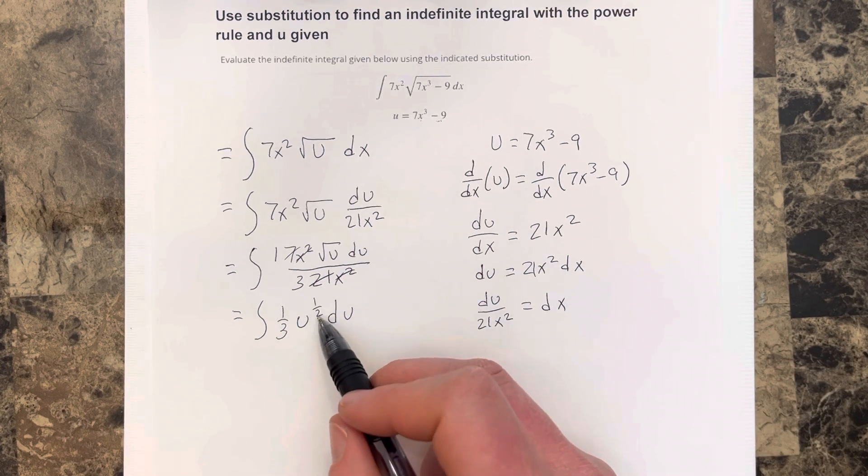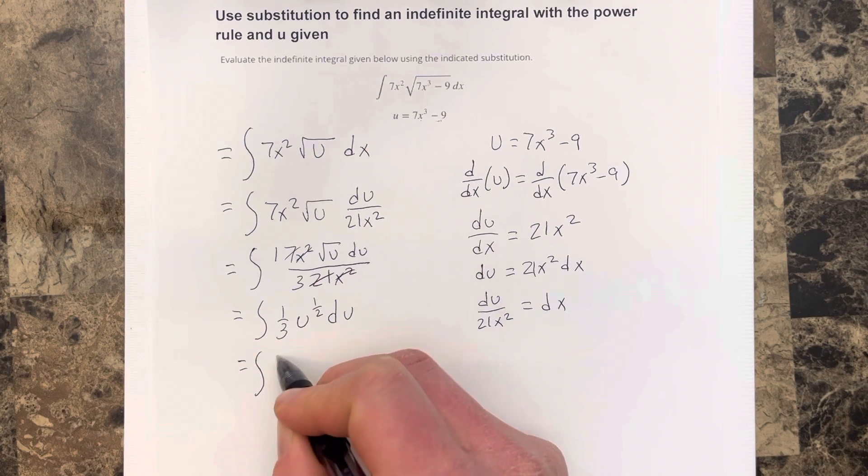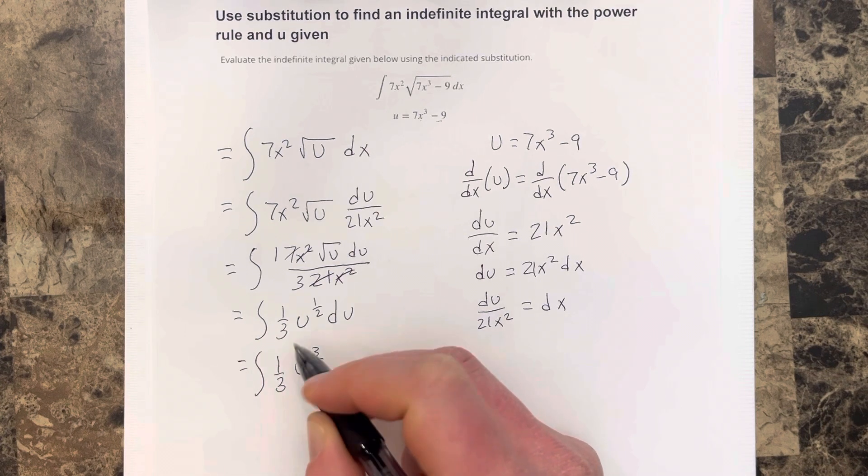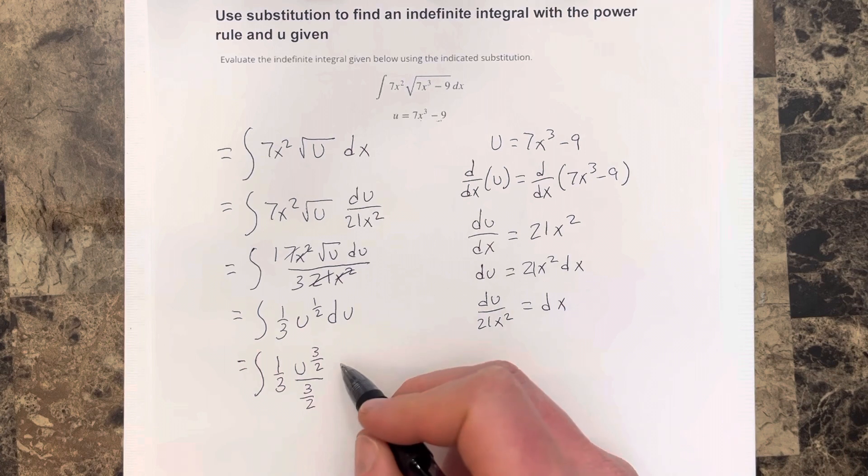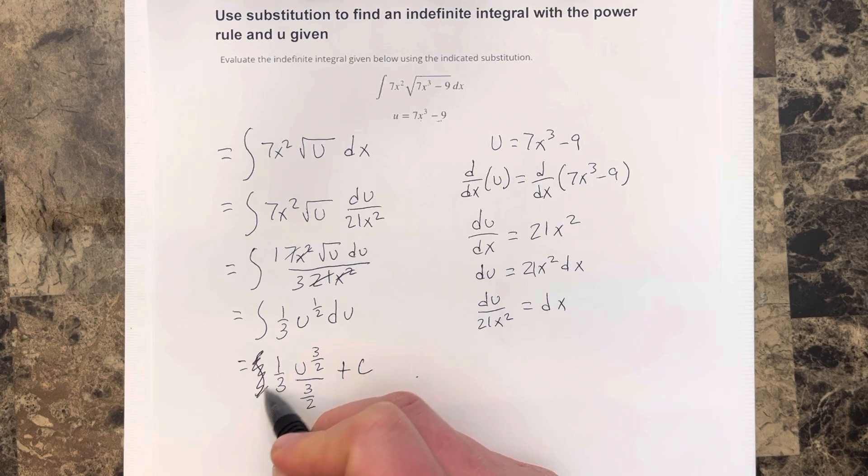Let's take the antiderivative by adding 1 to the power. So I get equals integral 1 third u to the 3 halves divided by 3 halves. And then this would be plus c. I didn't need the integral. Sorry. We just did the integration.